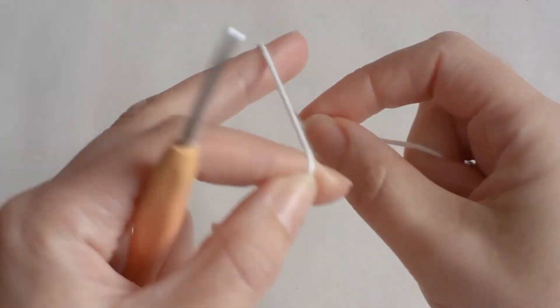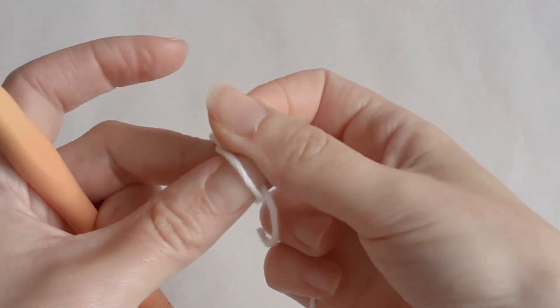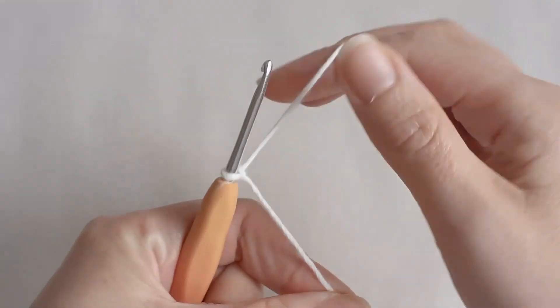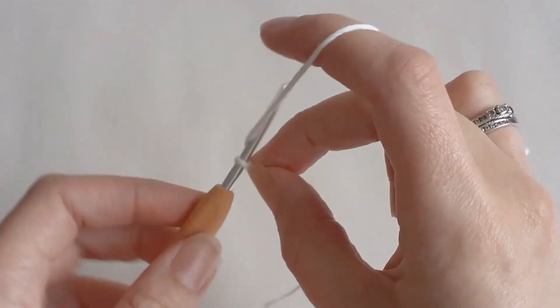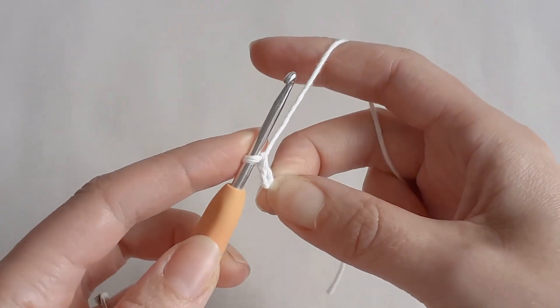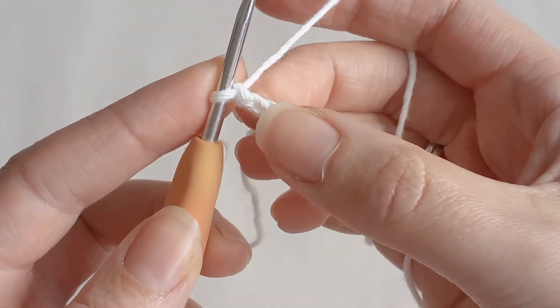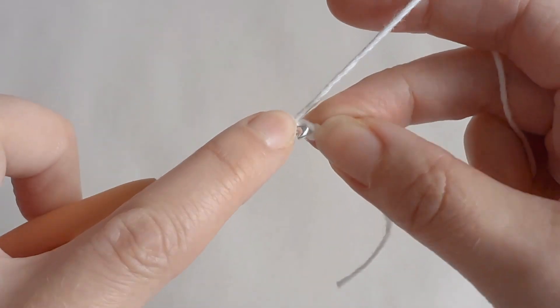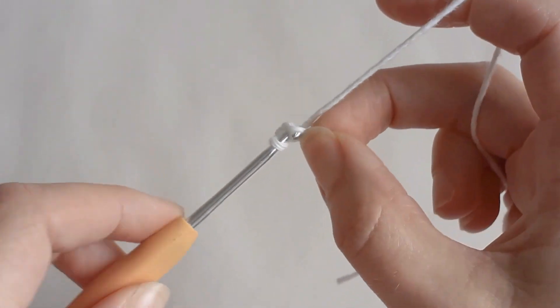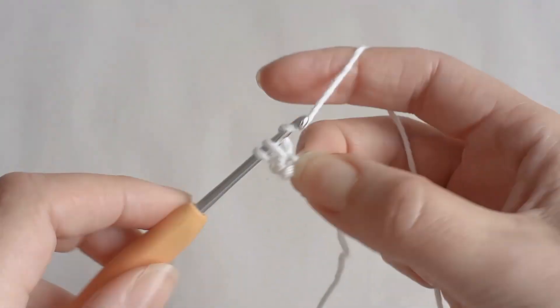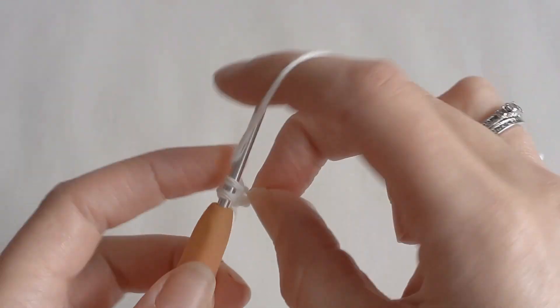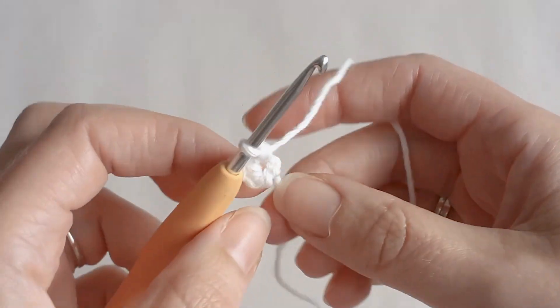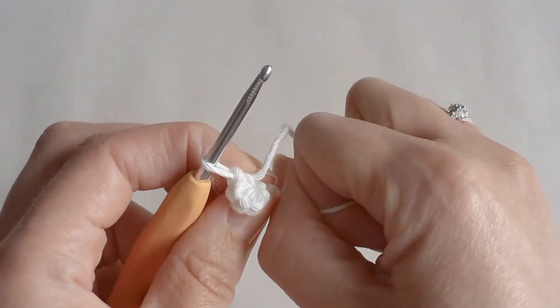To start, I'm going to take my white yarn to make the paw. Make a slip knot, chain two, and then I'm going to put four single crochets in the first chain that we made. Pull the tail tight.